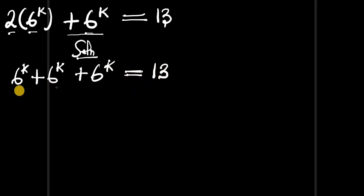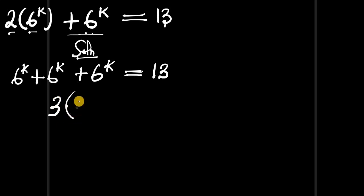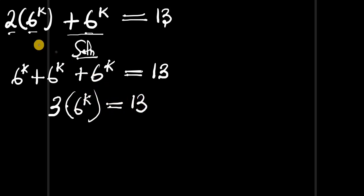So we can add them: 6^k plus 6^k plus 6^k equals 3 times 6^k, and this equals 13. You can also see it directly: 2 times 6^k plus 6^k gives 3 times 6^k equals 13.